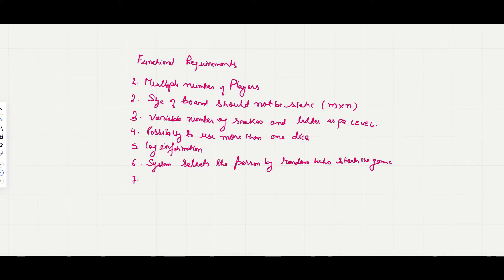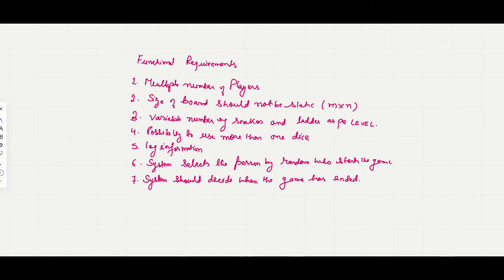The game will have two states: the start state and the end state. The system will decide when the game has ended. If any player has already reached the hundredth position — the final position — then the game has ended and that player will be the winner.